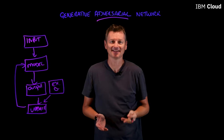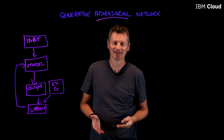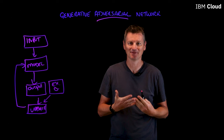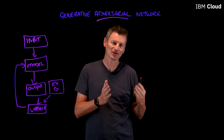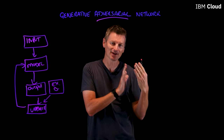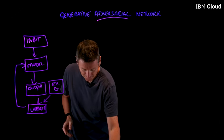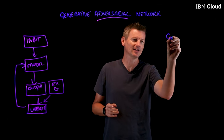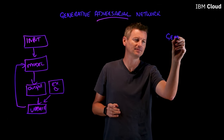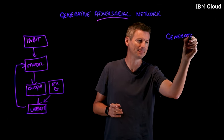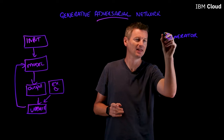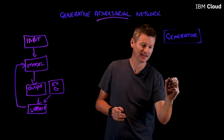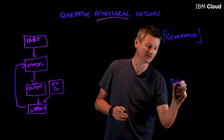A GAN is an example of unsupervised learning. It effectively supervises itself, and it consists of two sub-models: a Generator sub-model and a Discriminator sub-model.